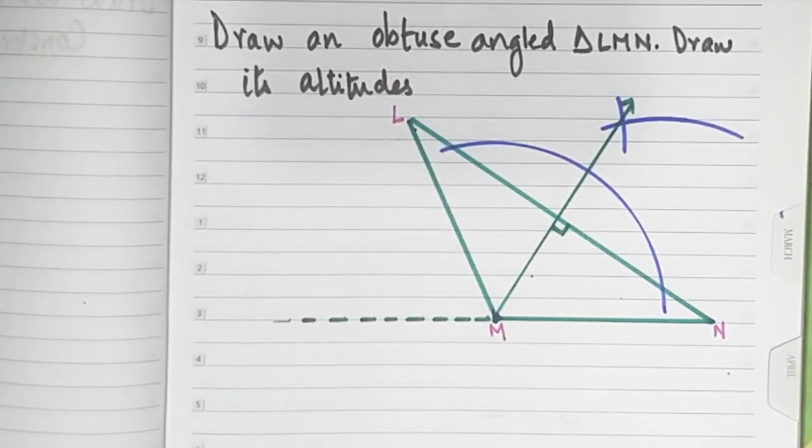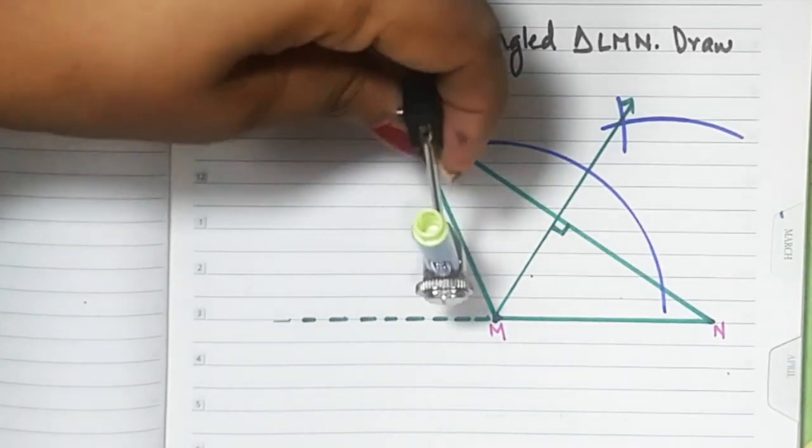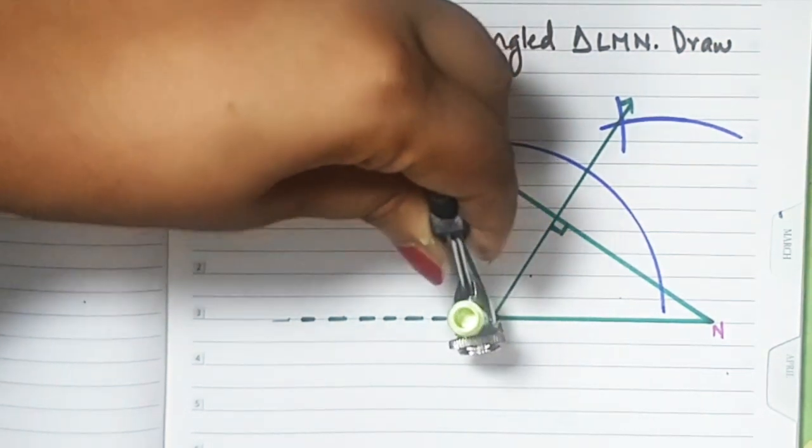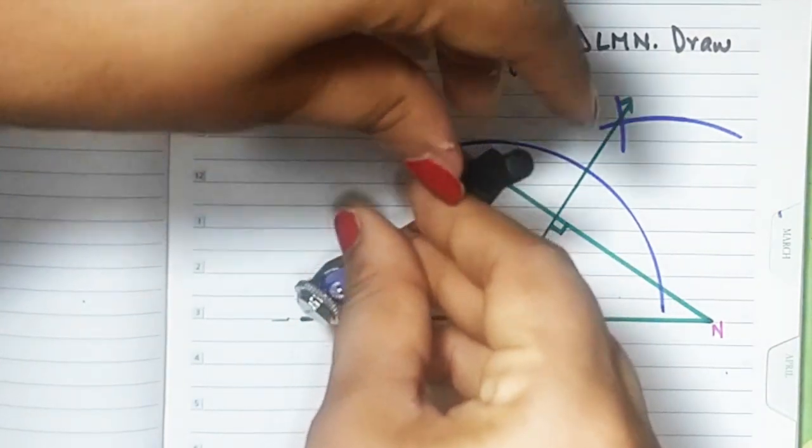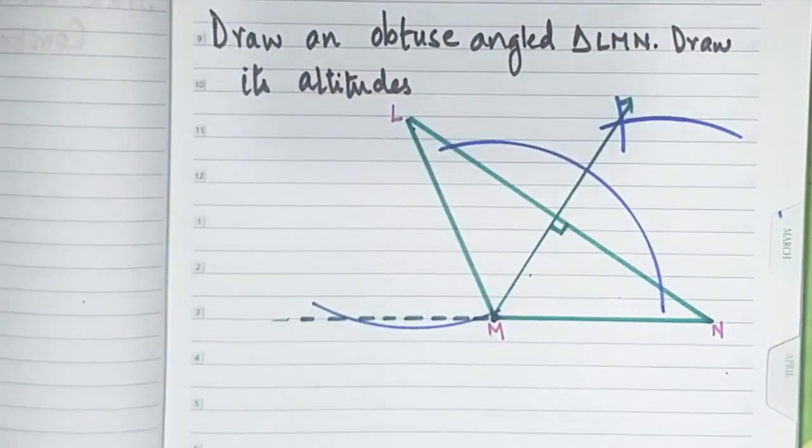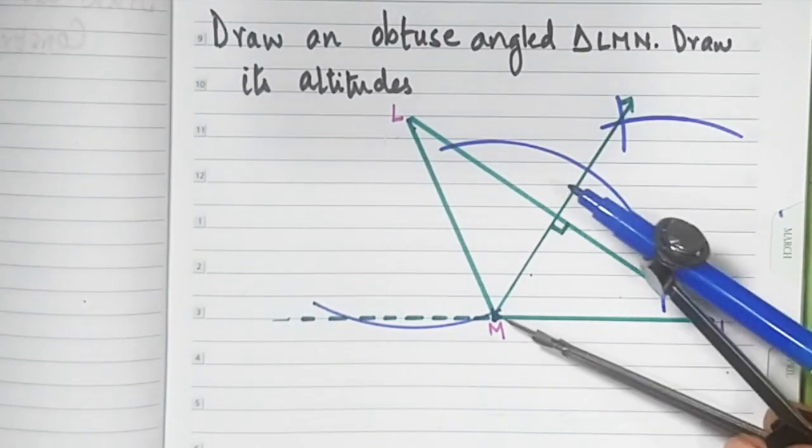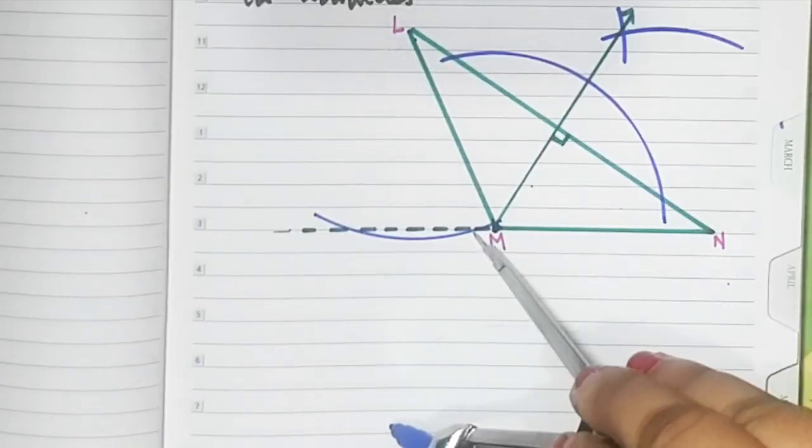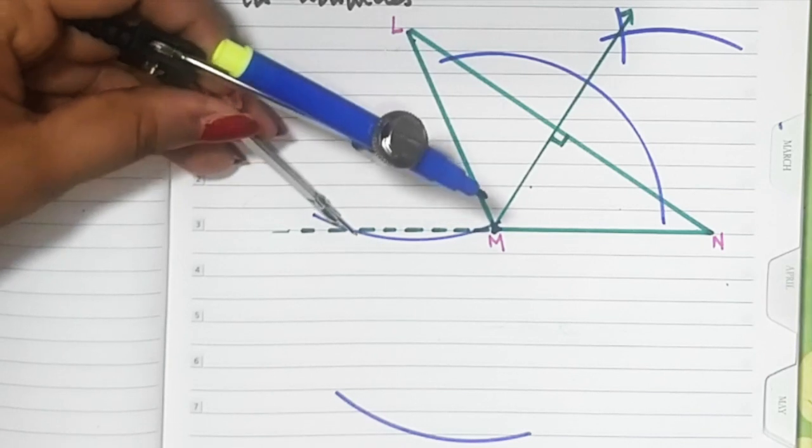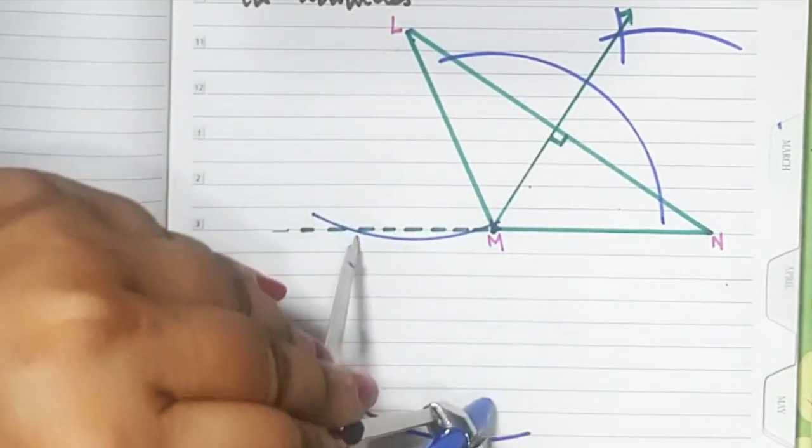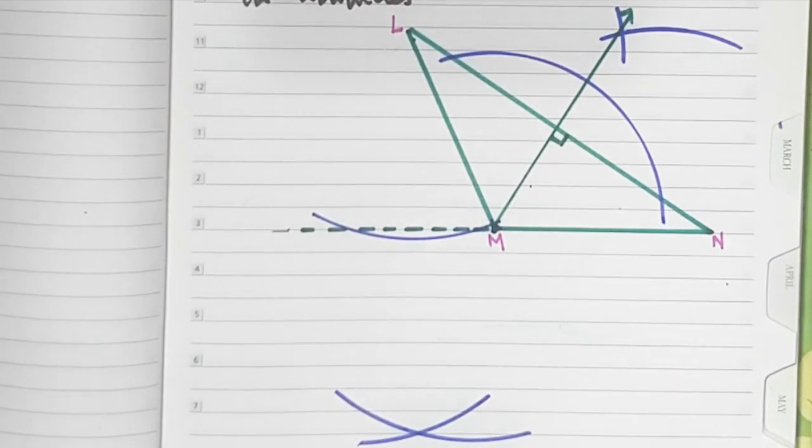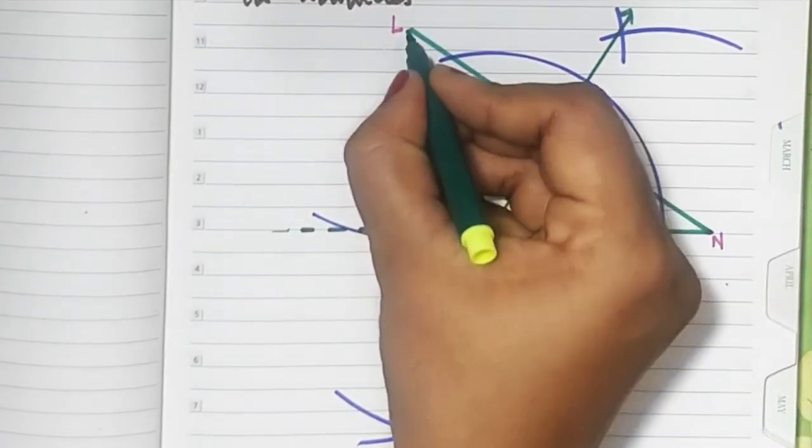Since I've extended this line, I'll keep my pointer at L. At this point, draw an arc. Keep your pointer at this point, draw an arc. Keep your pointer at this point where it cuts the dotted line, and cut that arc. Now join this point to L.